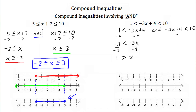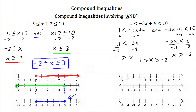For the second equation, we subtract 4 from both sides and end up with negative 3x has to be less than 6. Then we divide both sides by negative 3, and we end up with x has to be greater than negative 2, because we switched our inequality since we divided by a negative number. Now if we combine these two, we end up with negative 2 has to be less than x, which has to be less than 1.